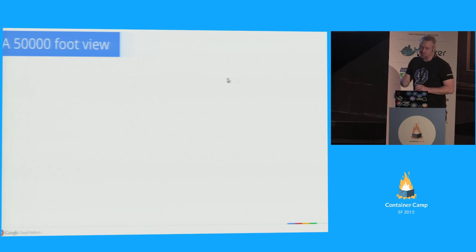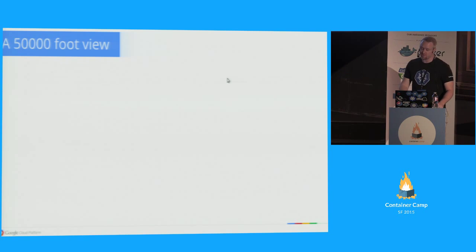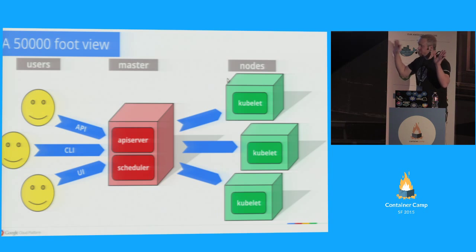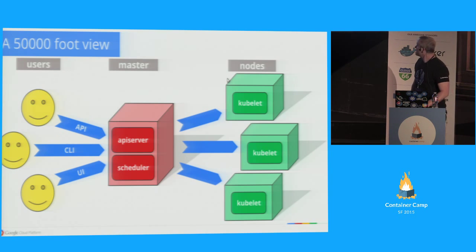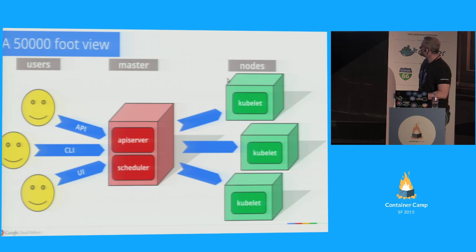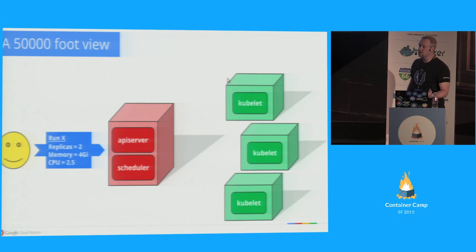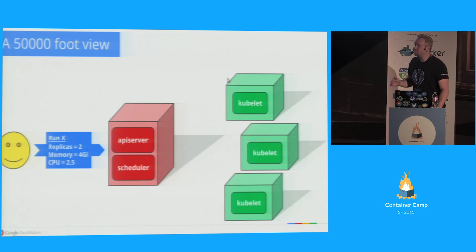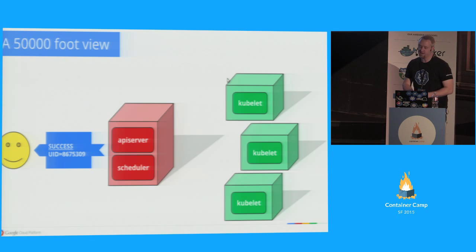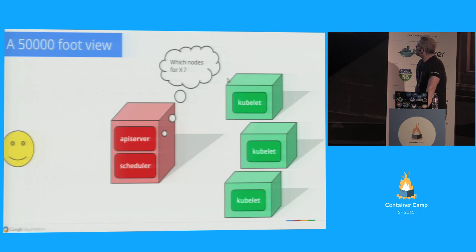I'm going to give you a 50,000-foot view of our system, intentionally getting some details wrong to make the conversation easier. From 50,000 feet, the system looks like this: you have users who talk to a master, the master makes decisions and does stuff with nodes — we used to call nodes minions, now we call them nodes. As a user, you say something like: run container X, I want two copies of it, four gigs of memory, two and a half CPUs. You submit this to your API server, which says sure and gives you a UID as a cookie to look things up later.